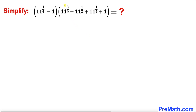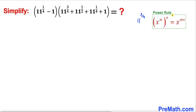The very first thing we are going to do is focus on this part: 11 power 3 over 4. Let's recall this power rule of exponents — this could be written as 11 power 1 over 4, whole power 3.